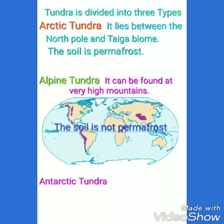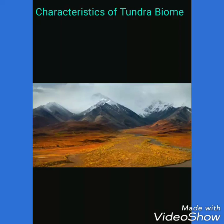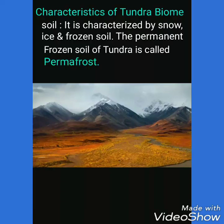The alpine tundra can be found at very high mountains, and its soil is not permafrost. The antarctic tundra occurs in the southern region of Antarctica and sub-antarctic islands. Now, the characteristics of the tundra biome: the soil can be characterized by snow, ice, and frozen soil.